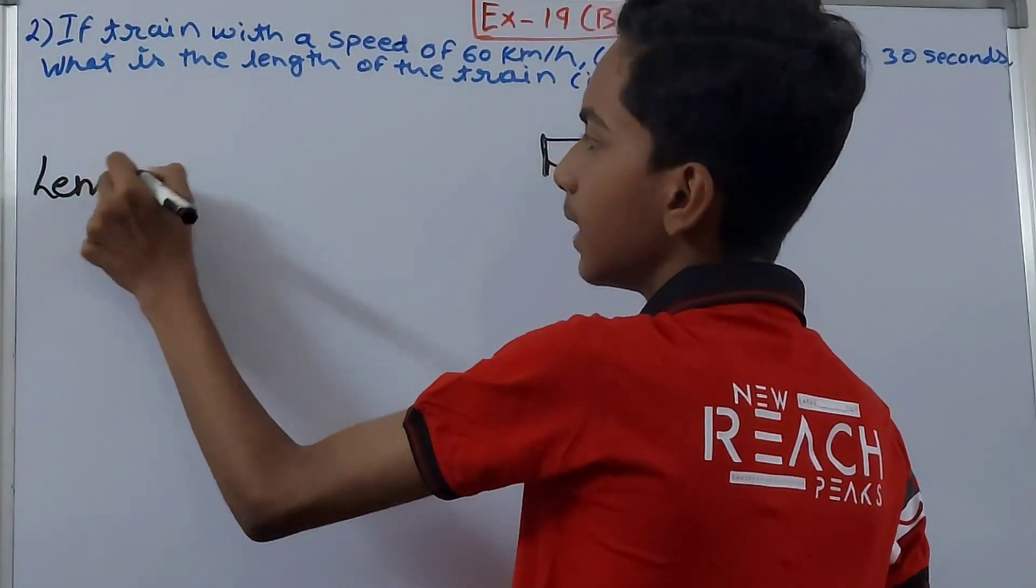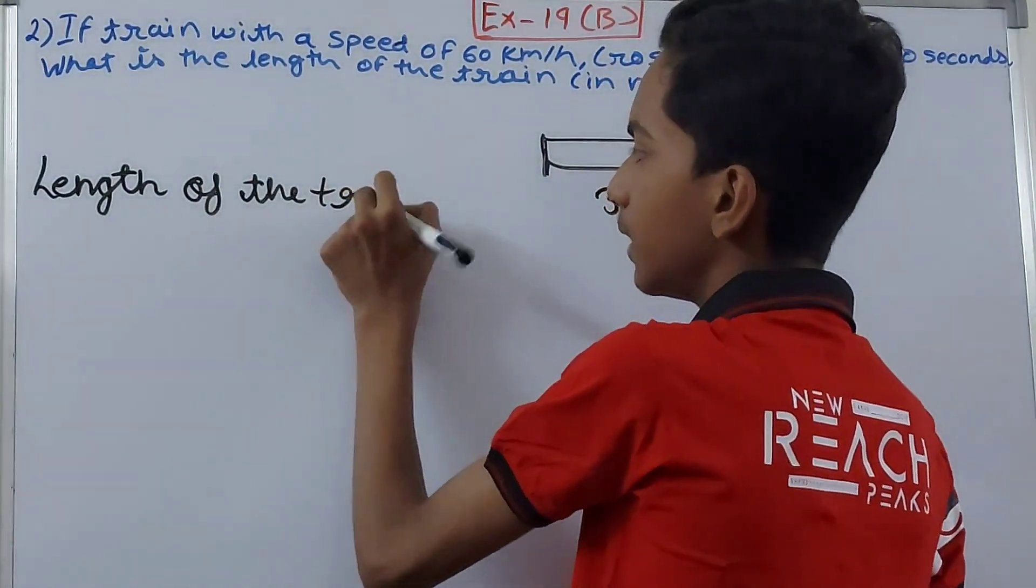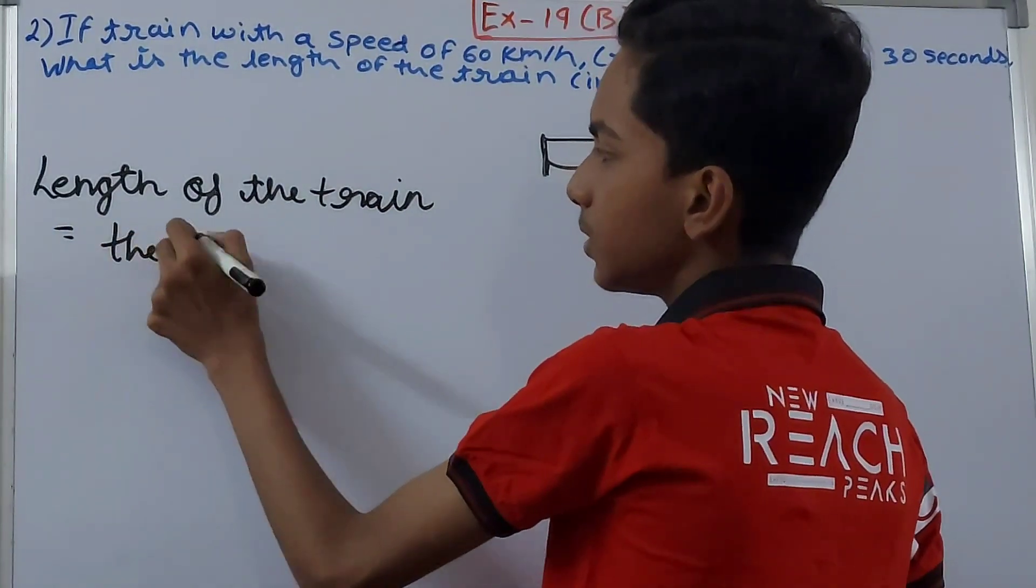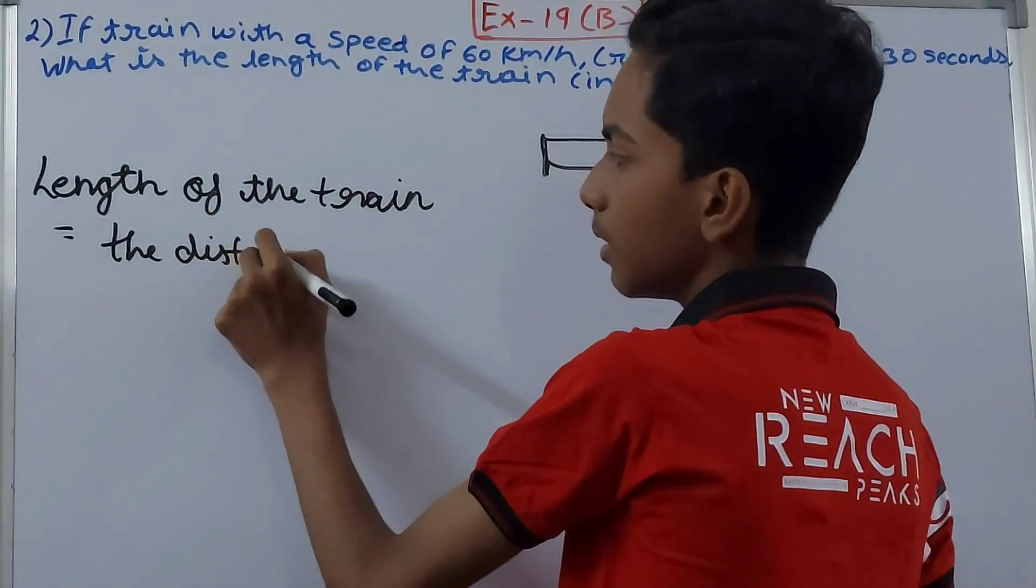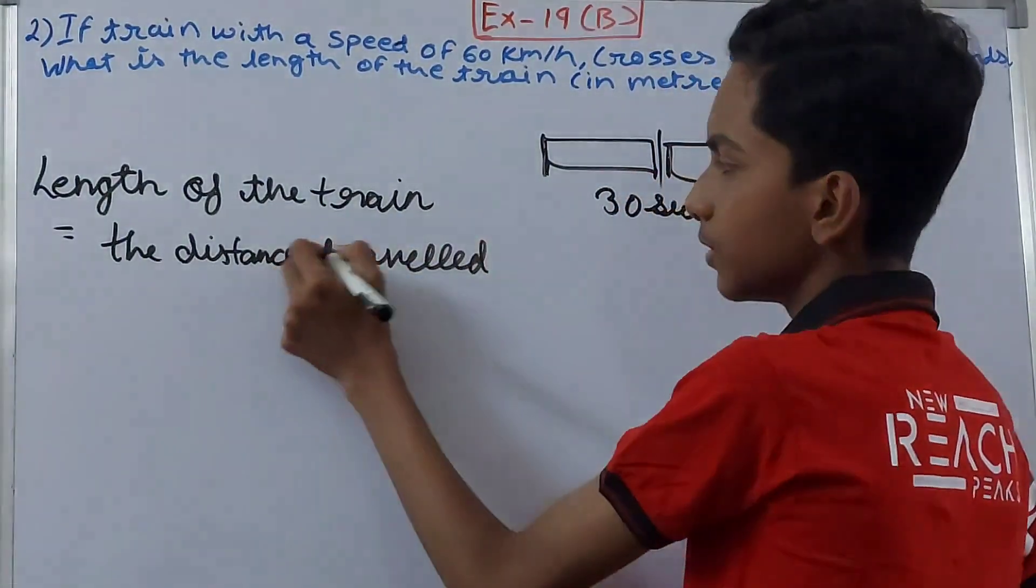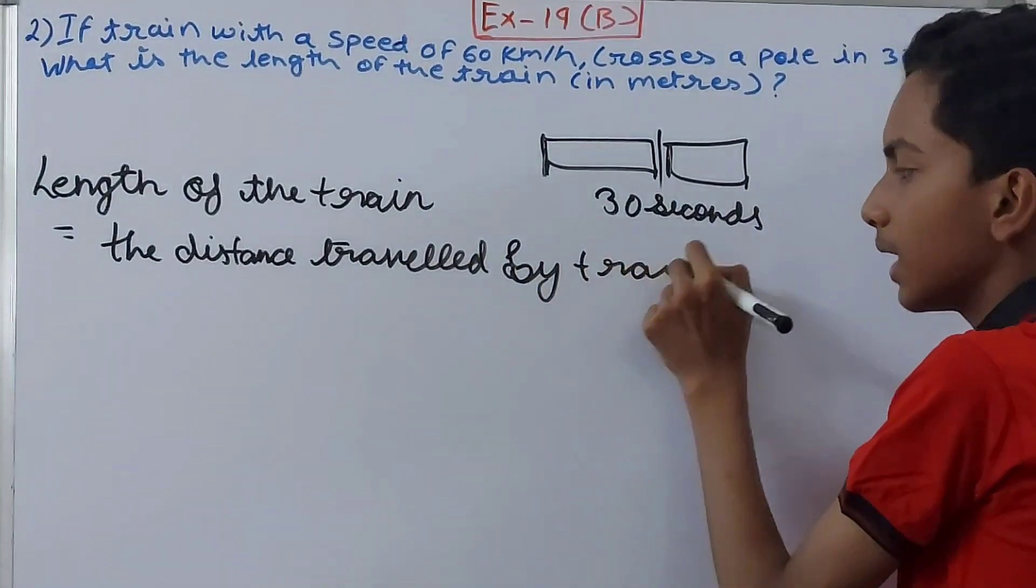Remember that I told you in the previous video as well that the length of the train equals the distance traveled by train. So this will be the length of the train, that is the distance it has traveled.